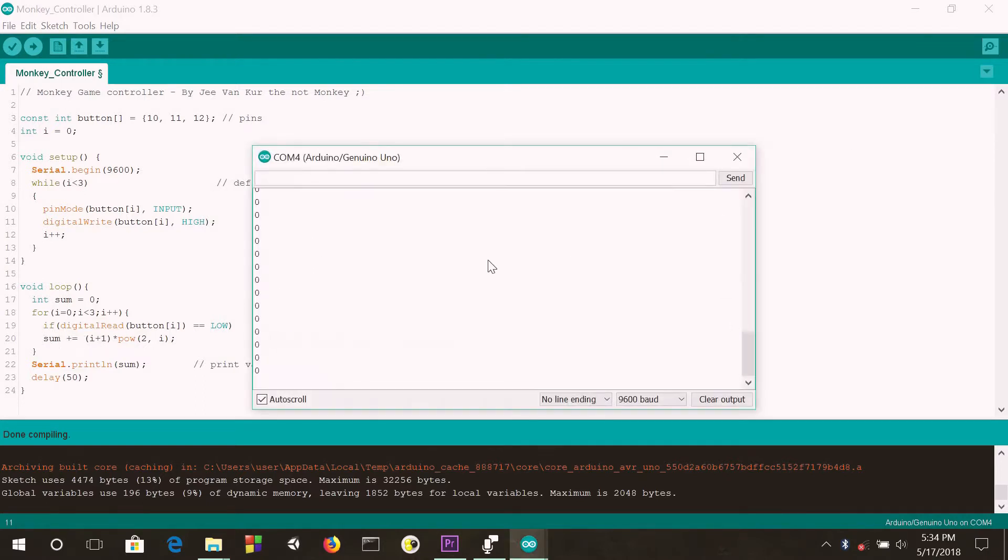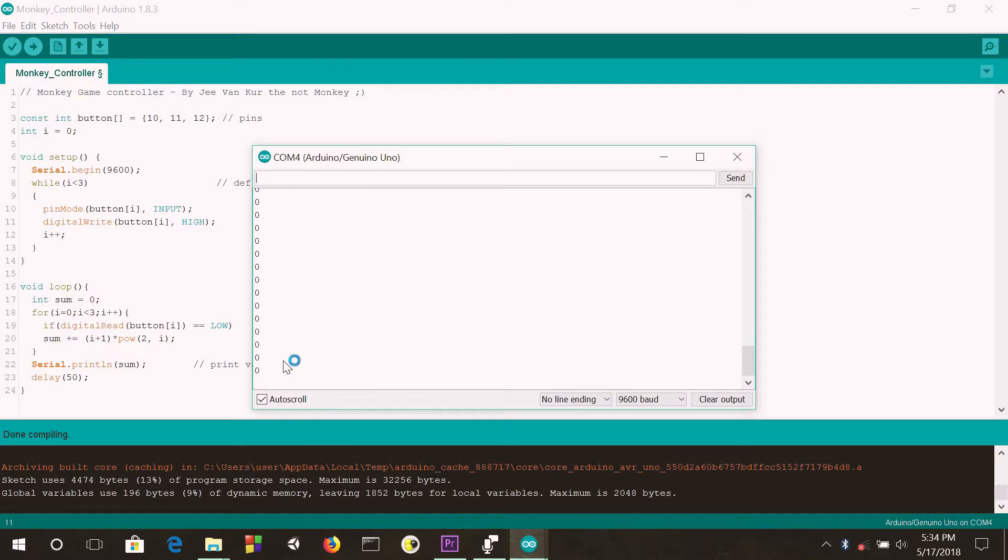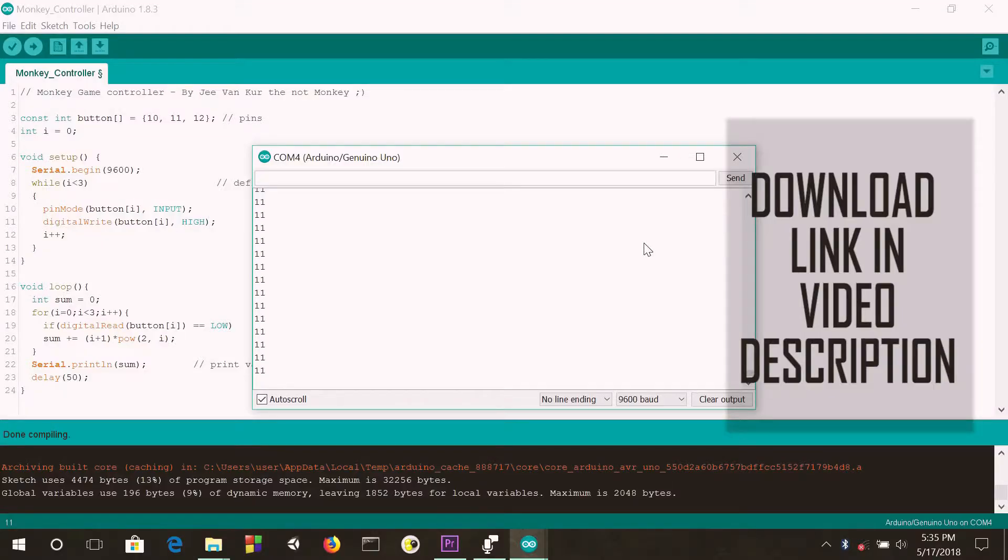Right now, if we switch on the serial monitor, we can see that the Arduino is returning the sum as 0 since none of the buttons are pressed. Now, if I press the left button, the Arduino returns 1 since its index is 1. If I press the central button, the Arduino returns 4. And if I press the right button, it returns 11.